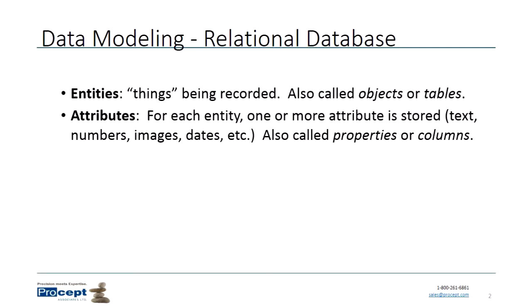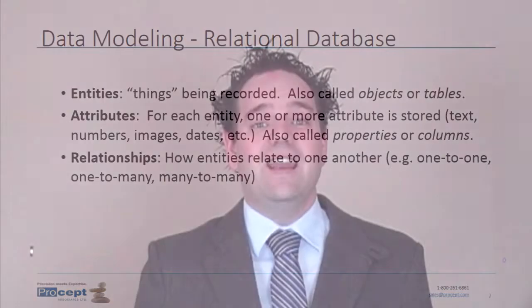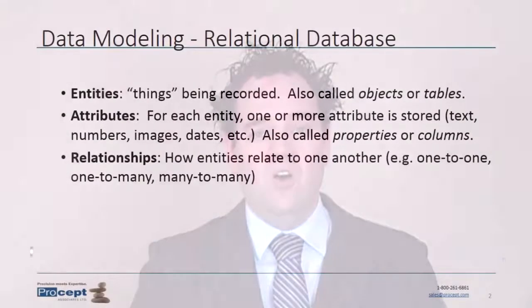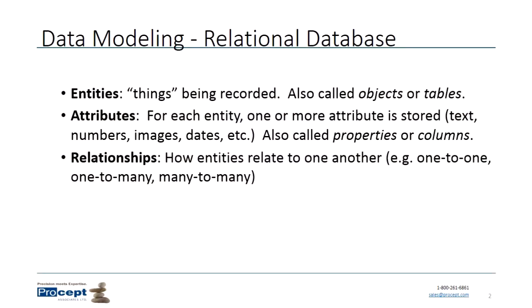We're trying to do something practical here, so just to mention very briefly: data modeling is really about relational databases — how they're structured and how they're created. The elements of those relational databases are entities — the things that we're recording, sometimes called objects or tables. Each entity can have multiple attributes, also known as fields, columns, or properties — these could be text, numbers, images, dates, and various data types. And then finally, relationships: how are entities related to one another — one to many, many to many, one to one.